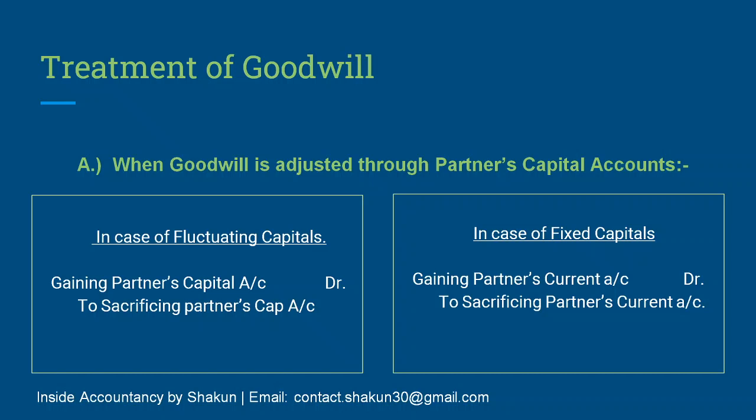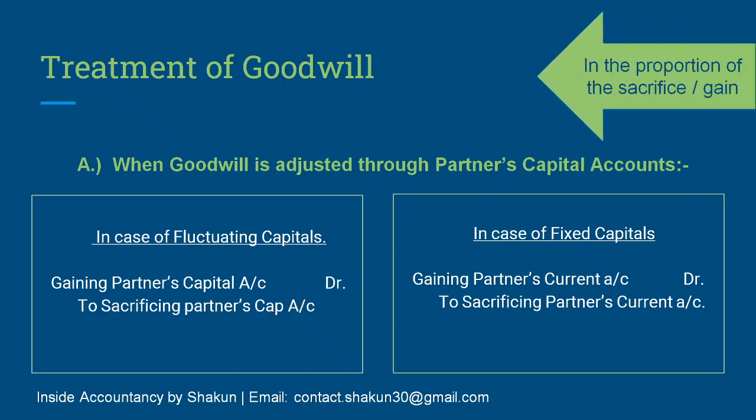There is another method for the treatment of goodwill. One important thing to remember: whenever you are passing this entry, you have to put the amounts in the proportion of the sacrifice or gain. I have explained in my previous video how sacrifice or gain can be calculated. On the basis of the proportion of sacrifice or gain, you have to pass these entries — it will be clear with the help of an example.